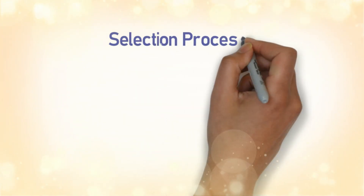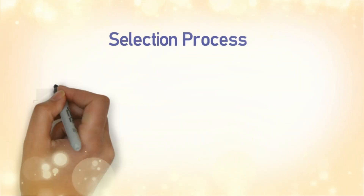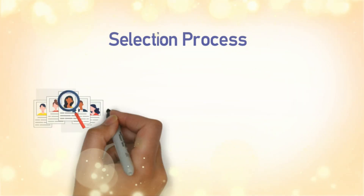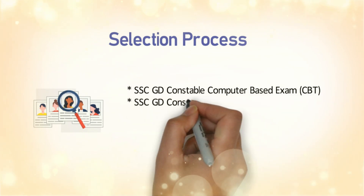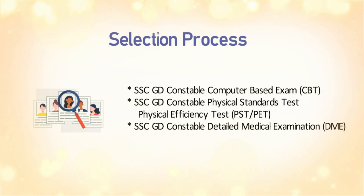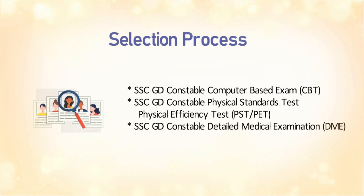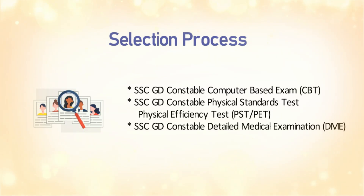Selection Process. Get prepared for a rigorous selection process. It includes a computer-based examination, a physical efficiency test, a medical examination, and finally the merit list. Your performance in each stage will determine your progress. The first step to preparing is to understand the SSC GD Constable exam pattern. The selection process comprises three stages, beginning with the SSC GD Constable computer-based exam.